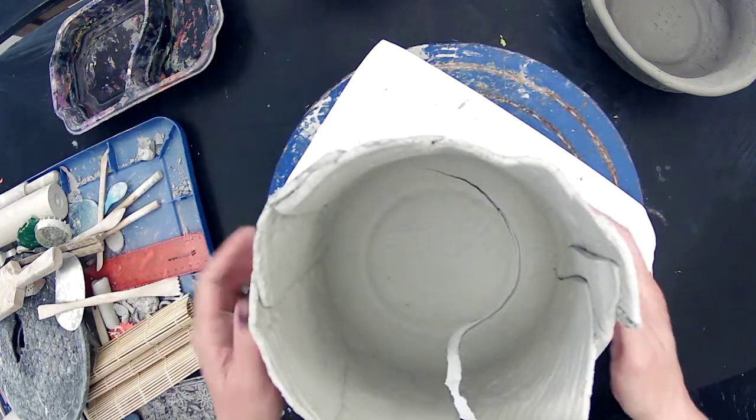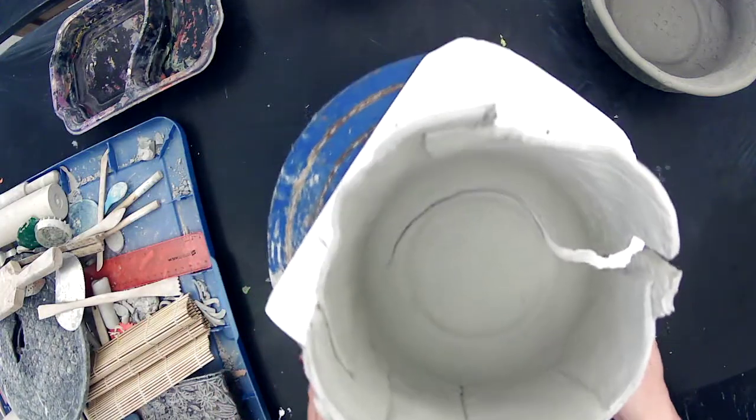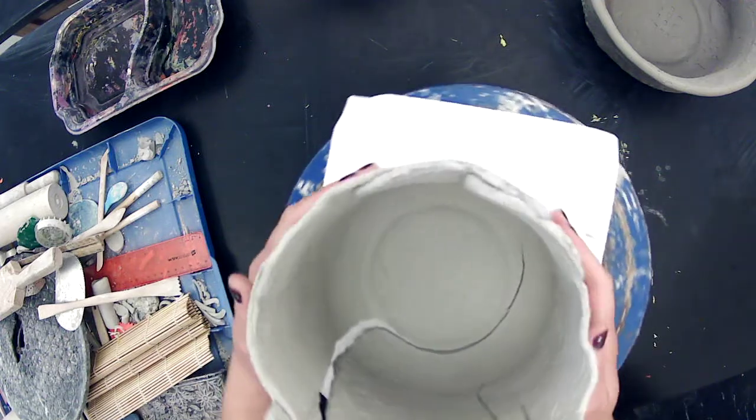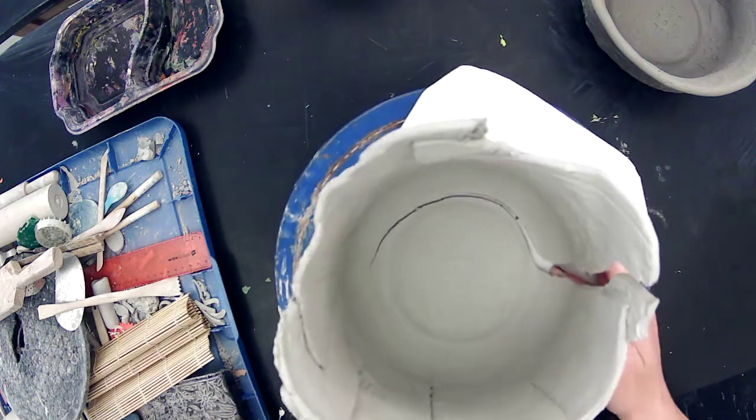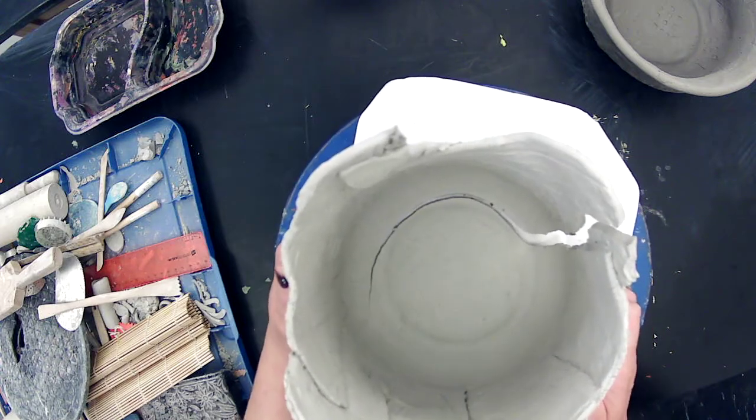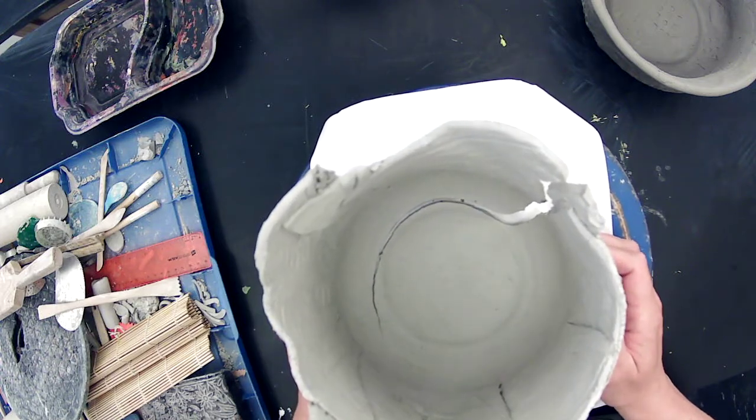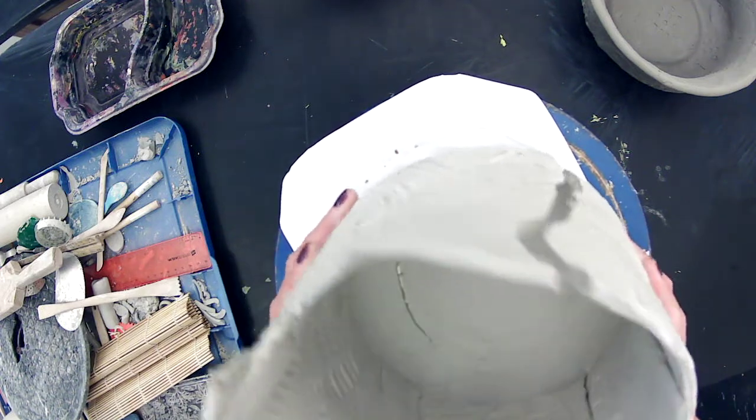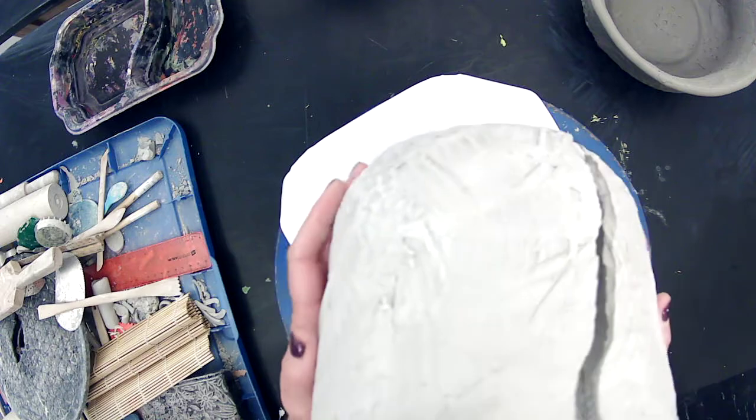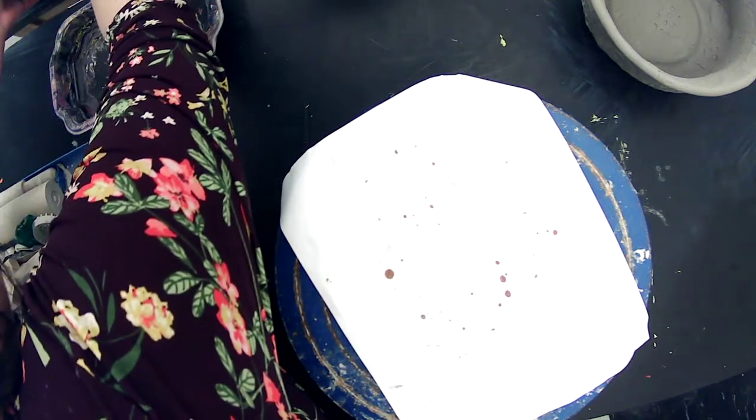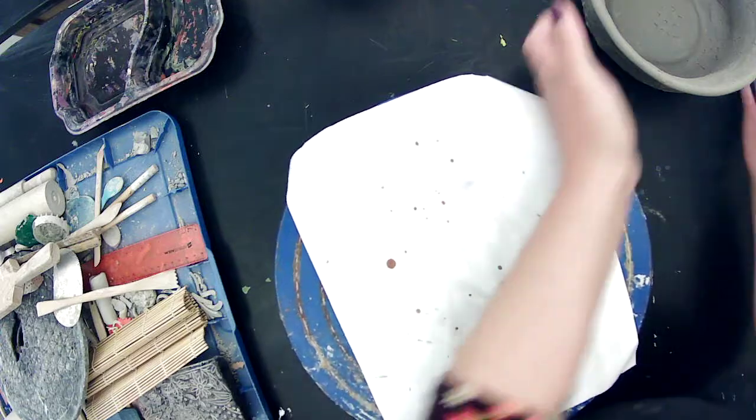This is what will happen to your form if you do not take it off the mold soon enough. Remember, your clay shrinks, and whatever that mold is probably not shrinking unless you've used clay too, but that clay is probably not drying because you've wrapped it in plastic. So if you leave your piece on there and it dries too long, it's just going to crack right open like this and you'll have to start over. That is a lesson in please babysit your pieces while they're on the mold and make sure you pull them off before they do that.